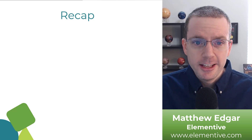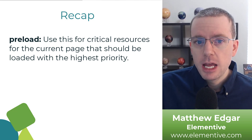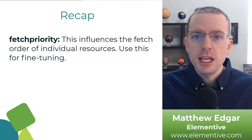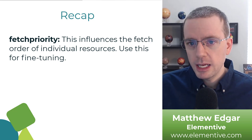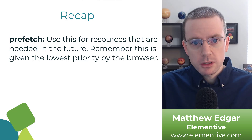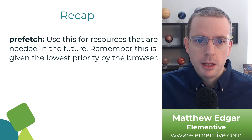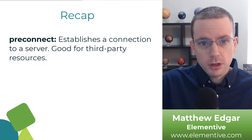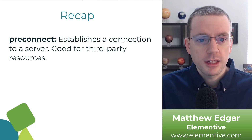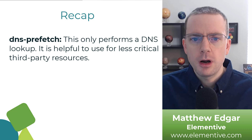We covered a lot of ground with all of these, so let's recap. Preload should be used for critical resources for the current page — it tells the browser to load those resources with the highest priority. Fetch priority influences the fetch order of individual resources, but it's only a hint, so use it for fine-tuning knowing the browser might ignore it. Prefetch should be used for resources needed in the future — it's given the lowest priority by the browser, so it might be ignored. Preconnect establishes a connection to another server — never use this for your own website, but it's good for third-party resources like connecting to a font library. DNS prefetch only performs a DNS lookup and is helpful for less critical third-party resources.